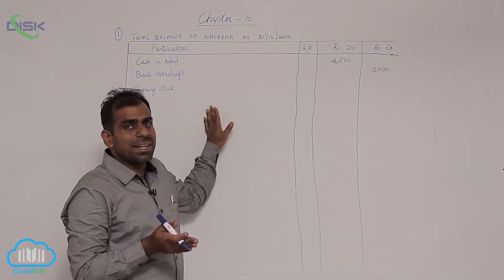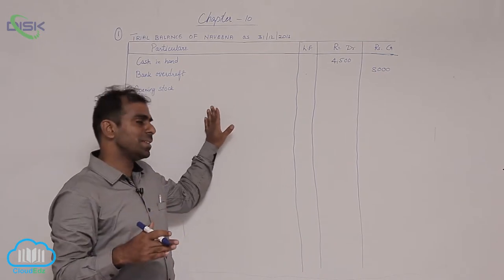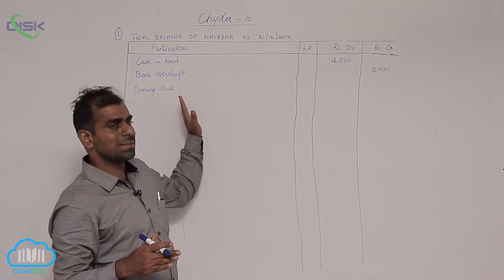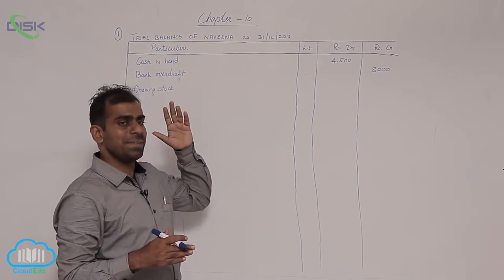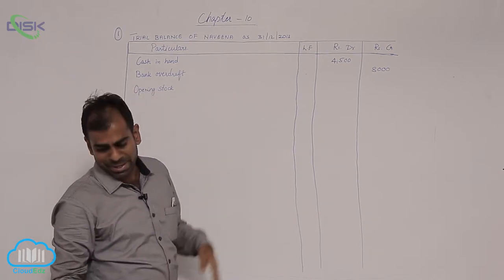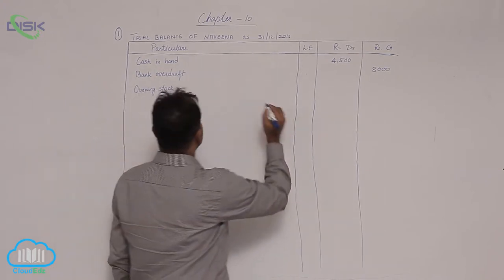So in the journal entries you debited purchases. So therefore this opening stock represents purchases previously. So it shows debit balance. How much? 20,000.